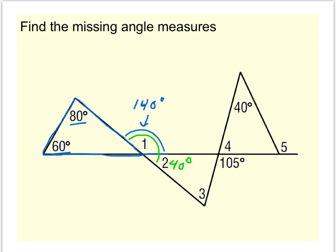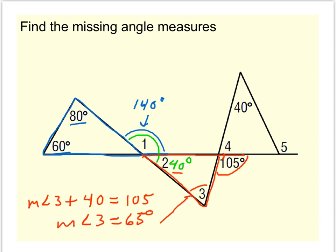Now to find angle 3, we're going to use the exterior angle theorem once again. Take a look at this triangle, the red one. I see 105 is an exterior angle, and the remote interiors are 40 degrees and angle 3. So that means the sum of the two remote interior angles is equal to the exterior. We can solve: measure of angle 3 is whatever 105 minus 40 is. So angle 3 is 65 degrees.